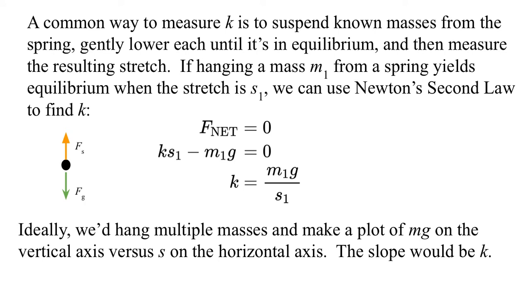A common way to measure k is to suspend known masses from the spring and generally lower each one until it reaches equilibrium, and then measure the resulting stretch. This is the lab that we did at the very start of the year. If hanging a mass M1 from a spring yields an equilibrium when the stretch is S1, we could use Newton's second law to find k. We look over at our free body diagram, which is almost trivial, but if we're in equilibrium, then the stretch upward, the force of the spring upward, will exactly balance the weight pulling downward, so the net force will be zero.